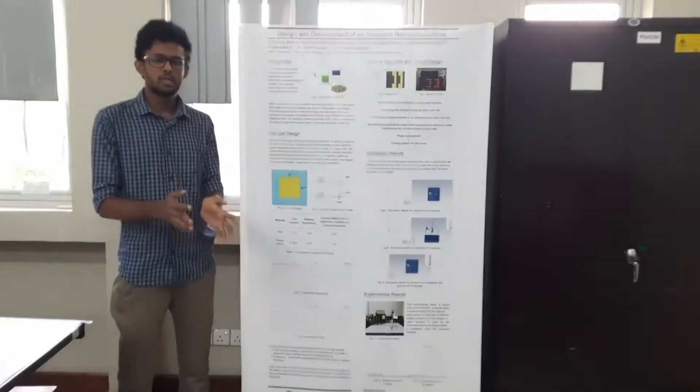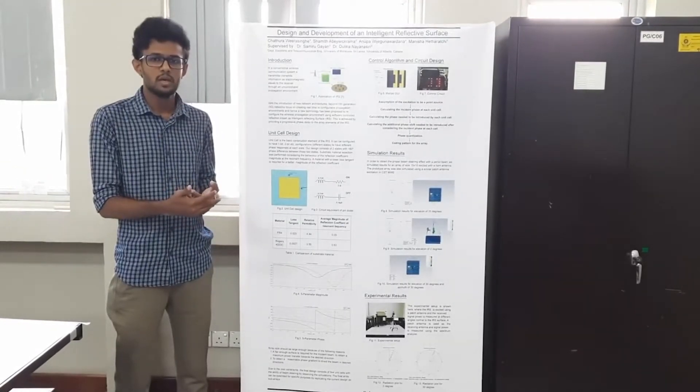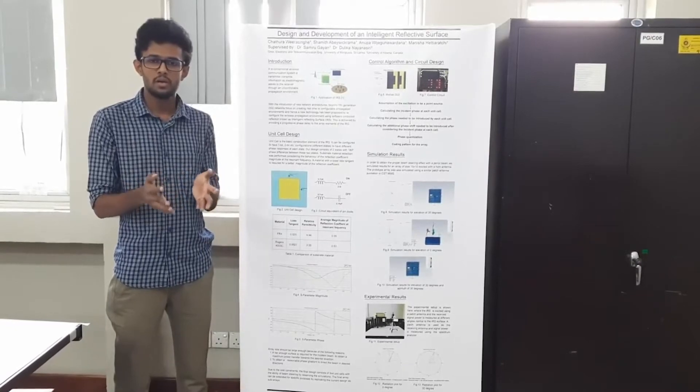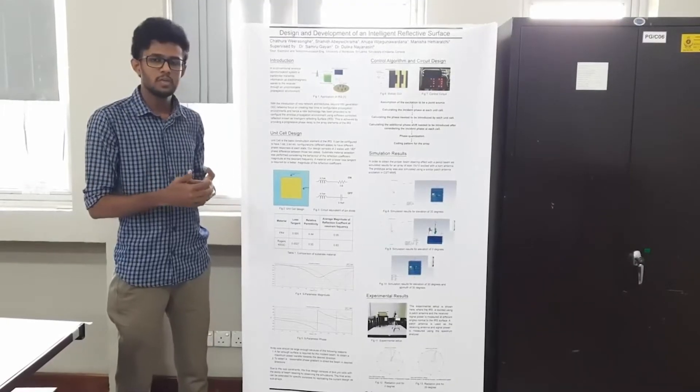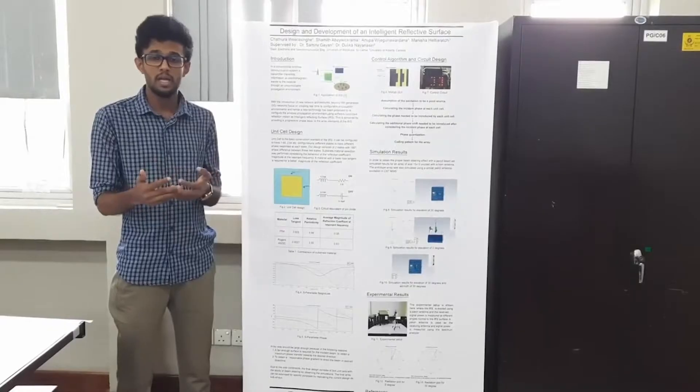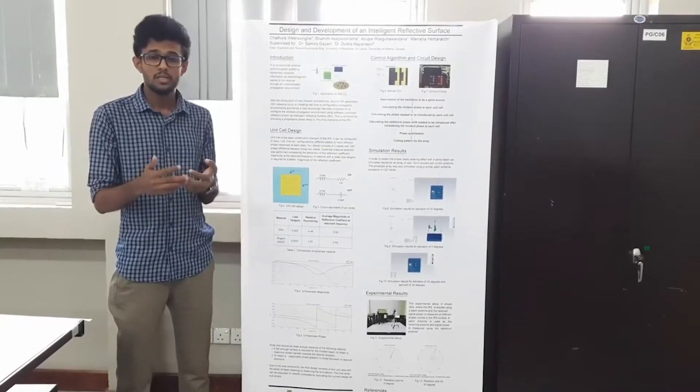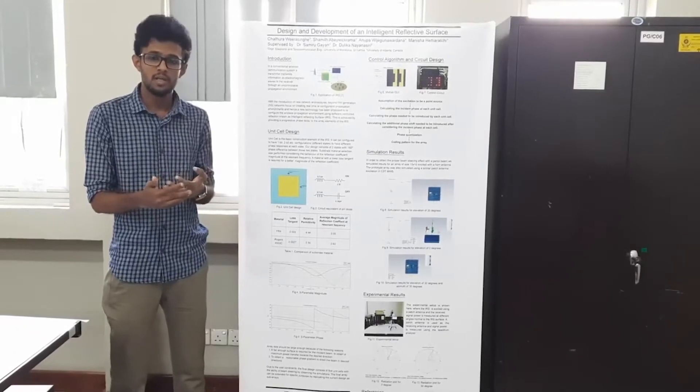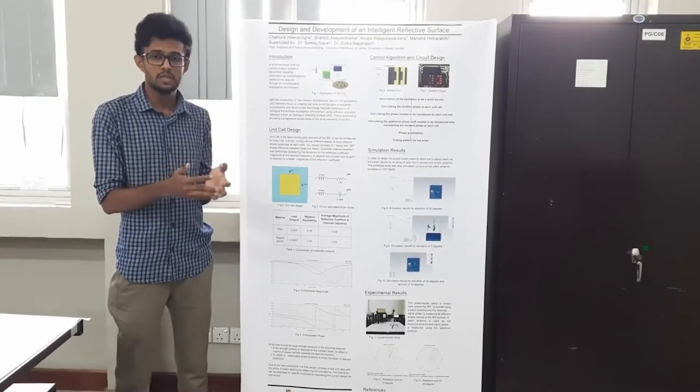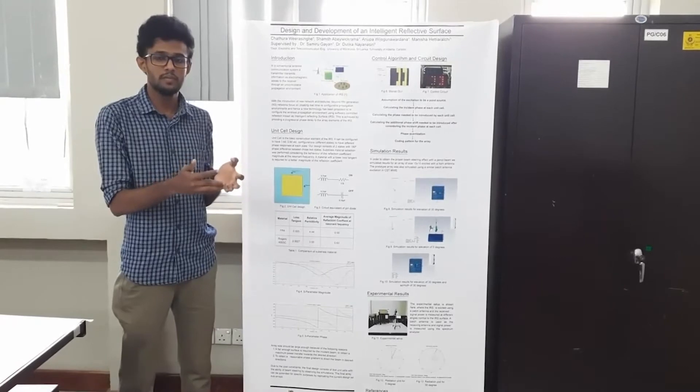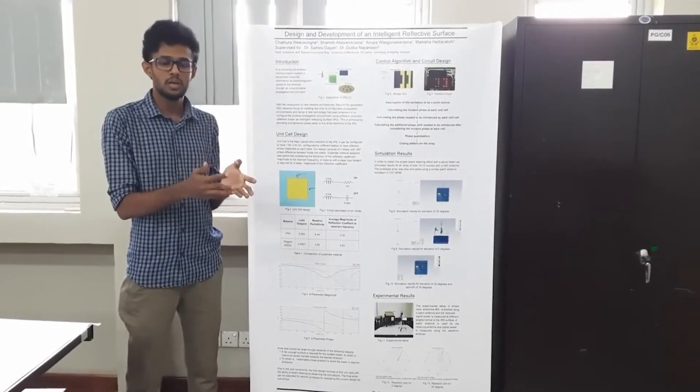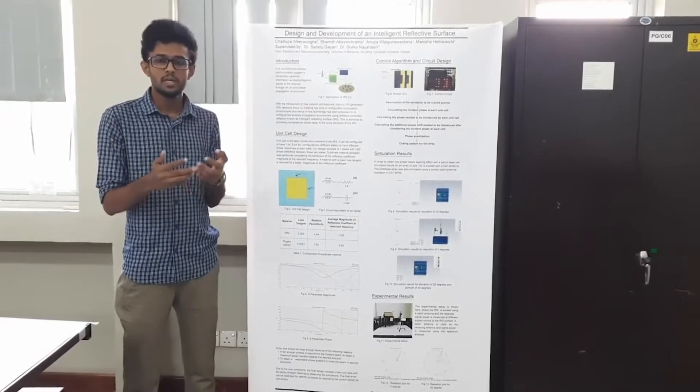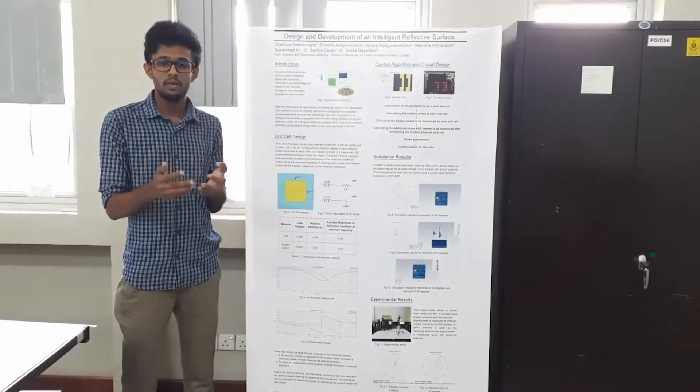So IRS is a collection of those unit cells that we replicate into a certain size and each of those unit cells can be controlled independently. When we are going from the unit cell to the IRS, mainly we have to consider two factors: the first one is the power transfer and the other one is we have to apply a certain phase gradient to the surface so that constructive interference happens towards the desired direction.